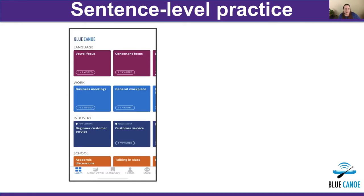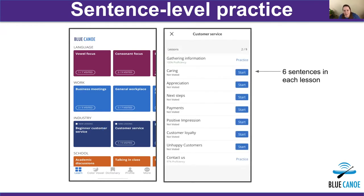Word-level practice is important yet not sufficient, and it's for this reason that we've created our sentence-level lessons. As shown here, we've organized lessons into supercategories like language, work, and industry. Within each category are subcategories like customer service, and then within that category are a number of lessons. Each lesson contains six sentences. Let's see what one looks like.